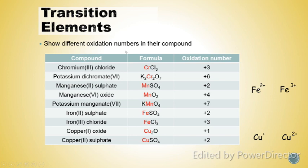Let's look at the first characteristic of transition elements: most transition elements show different oxidation numbers in their compounds. For example, from the name chromium(III) chloride, we know that the oxidation number for chromium in this compound is +3. For another example, potassium dichromate(VI) — from the name, we know that the oxidation number for chromium in this compound is +6. That's why we say that chromium, as a transition element, has different oxidation numbers in different compounds.